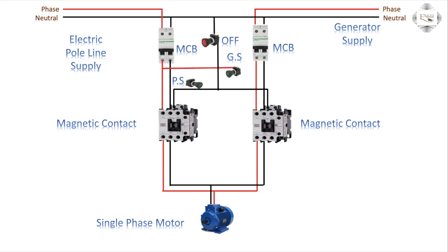Next connection: GS connection — phase line switch connection to NC. NC connection, or NC outgoing to A2, first magnetic contact connection. Second magnetic contact connection.